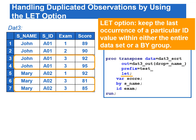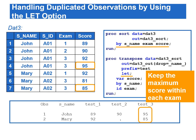Sometimes data sets contain duplicated records — for example, double entries of scores for the third test. For situations with duplicated records, we may want to keep only one record, such as the largest or smallest of the duplicated entries. The LET option from the PROC TRANSPOSE statement allows us to keep the last occurrence of a particular ID value within either the entire data set or a BY group. To keep the largest value of each exam within each group, we sort by S_name, then exam, then score in ascending order. To keep the smallest score instead, we sort S_name and exam in ascending order, then sort score in descending order.